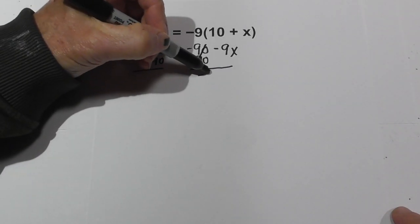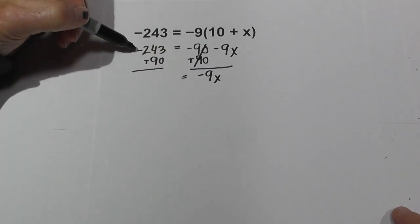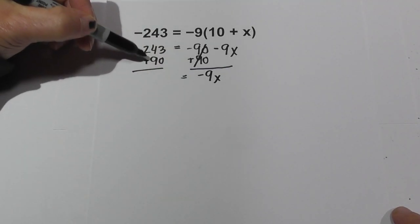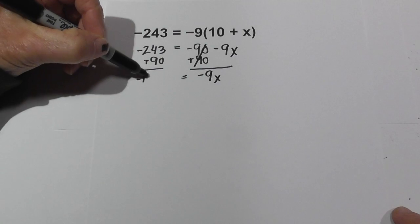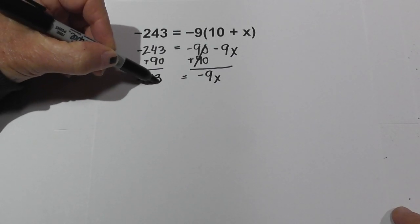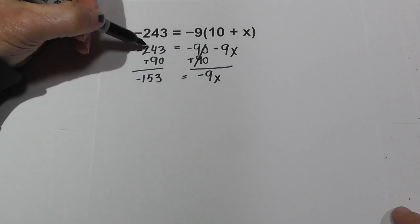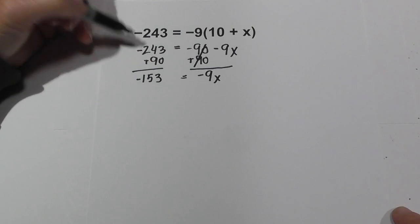So we will add 90 to both sides. These cancel. Bring down negative 9x equals and negative 243 and a positive 90 equals a negative 153.